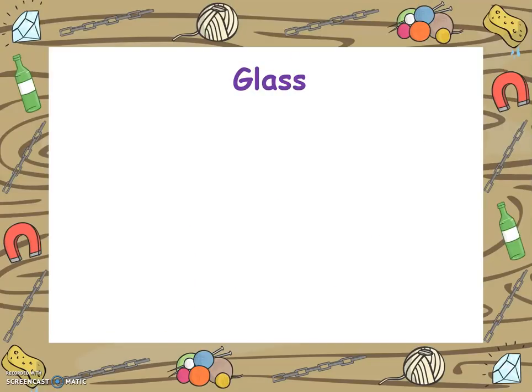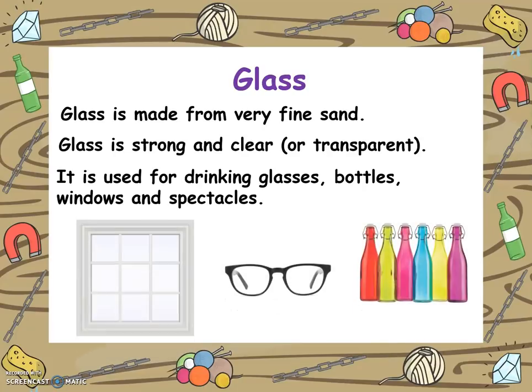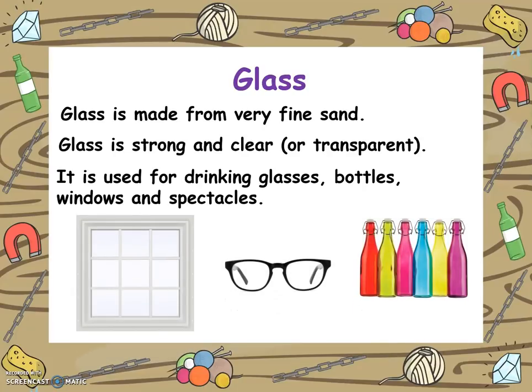The next material we will look at is glass. Glass is made from very fine sand. It is strong and clear. Another word for clear is transparent. It is used for drinking glasses, bottles, windows and spectacles. We can find these in our homes and in the classrooms.